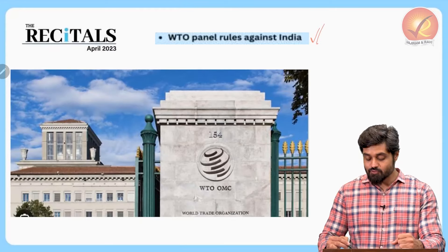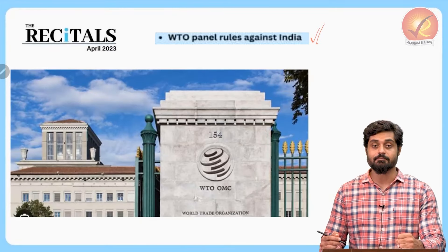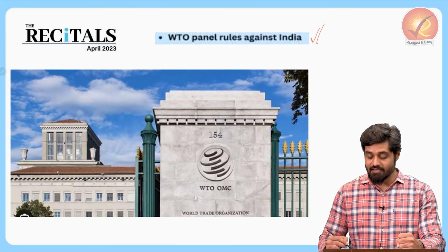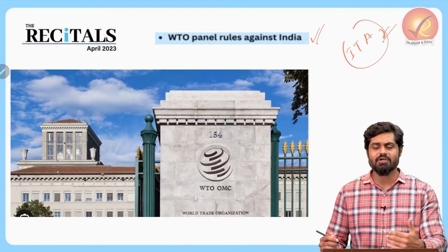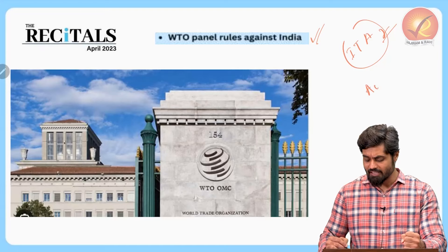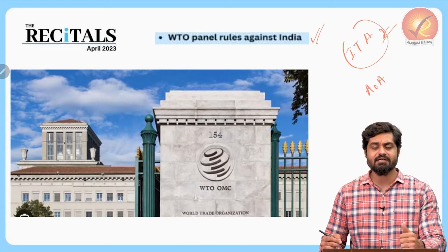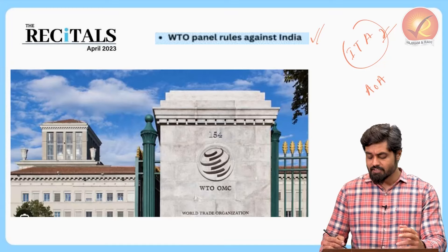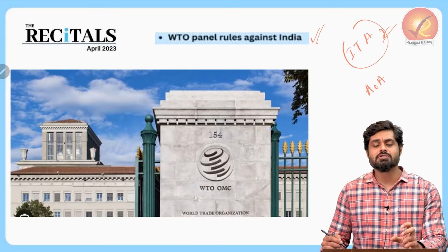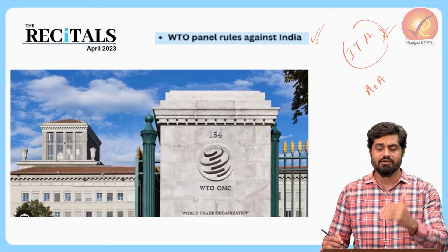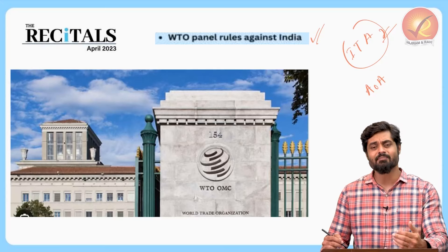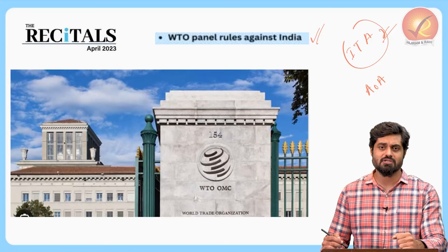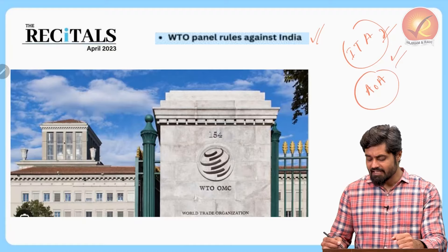The panel that ruled against India recently is related to WTO's Information Technology Agreement. WTO has many agreements, some related to agriculture such as the Agreement on Agriculture, to which India is also a signatory. These agreements are concluded to ensure that tariff rates and barriers to trade in terms of custom duties are reduced down across the globe.